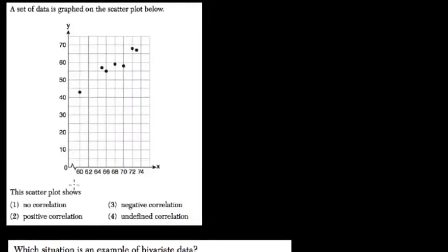Instead of data as graphed, this scatter plot shows what kind of correlation. Well, here we have this almost linear trend right here, so I'm going to say it's a positive correlation.